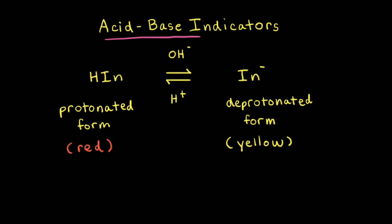Let's look at a hypothetical indicator. In the protonated form, the indicator has the formula HIn — this would be the acidic proton on the protonated form. When base is added, the protonated form is converted into the deprotonated form, so we lose an H and we lose a positive charge. The deprotonated form is represented by In with a negative charge.